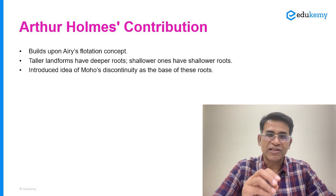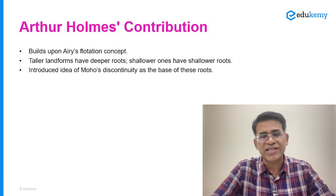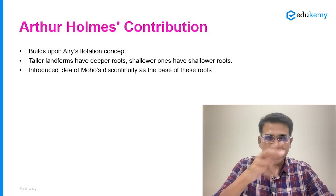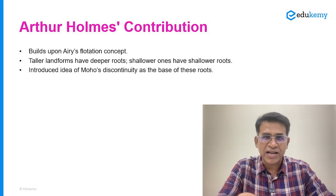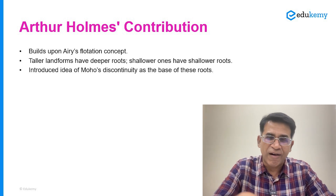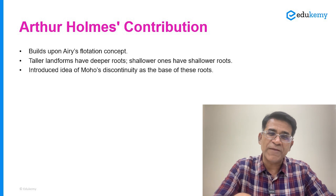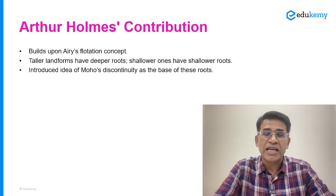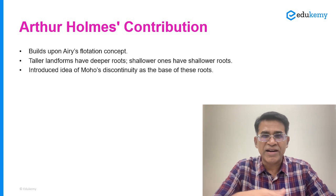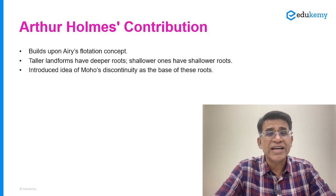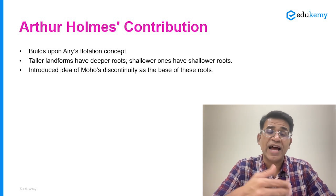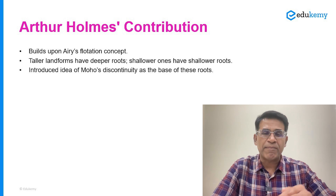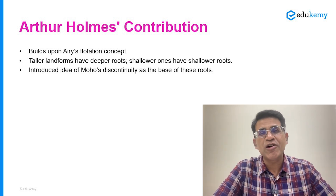If they ask you Arthur Holmes, he is essentially presenting a modification of Airy's theory. You start with what isostasy is, then tell what Pratt and Airy say and the controversies about whether isostasy is compensation-based or flotation-based. The theory by Airy and Pratt was given in the 1850s. Almost 70-80 years later, Arthur Holmes gave his theory in the 1920s and 30s. Arthur Holmes had the advantage of having verified both Pratt and Airy, and he also knew quite a bit more about the interiors of the Earth than Airy or Pratt had known.